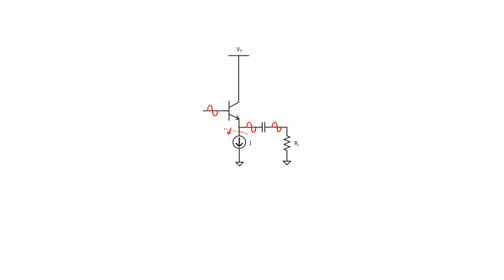The resistance looking down into a perfect current source is infinite, so our voltage divider is going to look more attractive now. Our overall expression for the gain would include an input voltage divider, a gain of one for a common collector amplifier, and then our output voltage divider. But here, the output voltage divider is set up by only two resistors — R sub L and r sub e — and there's no resistor in parallel with R sub L anymore. In other words, the AC gain is always going to be higher than it was in the last example. If you use a current source, your gain is a little bit better and your buffer is better.